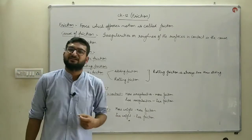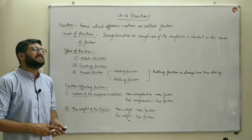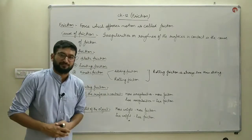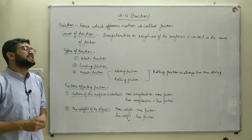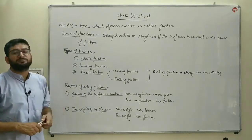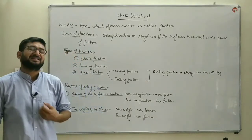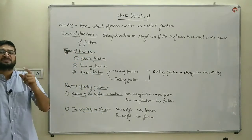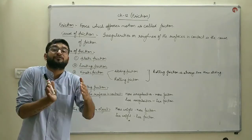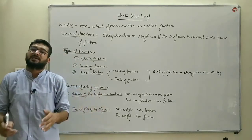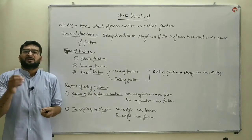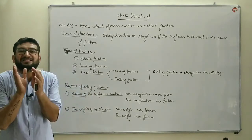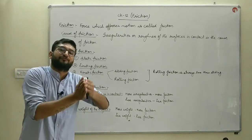Next, factors affecting friction. There are in total two factors which affect friction. The first one is the nature of the surface of the objects in direct contact. The second one is the weight of the object. Regarding the first factor — nature of the surface — more roughness of a surface means that surface produces more friction.